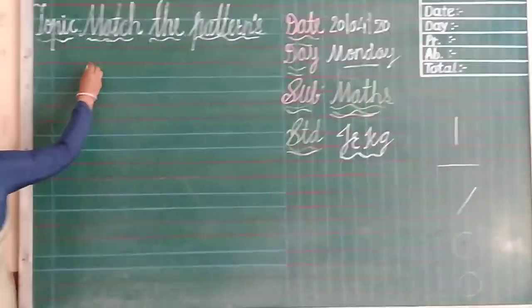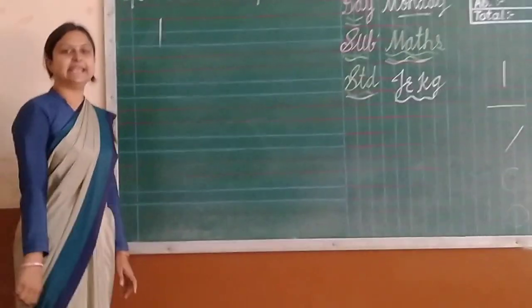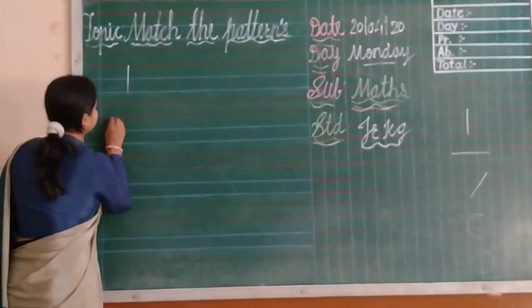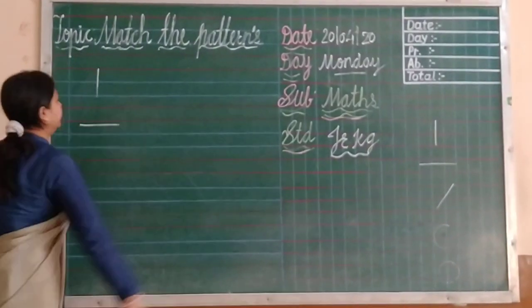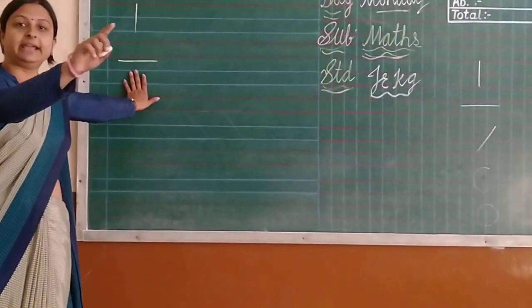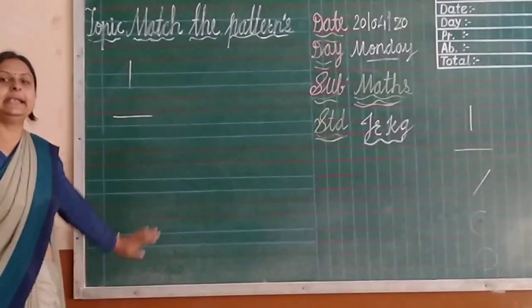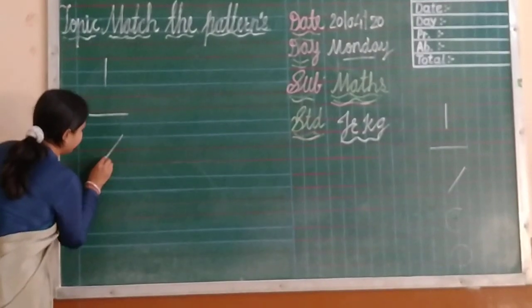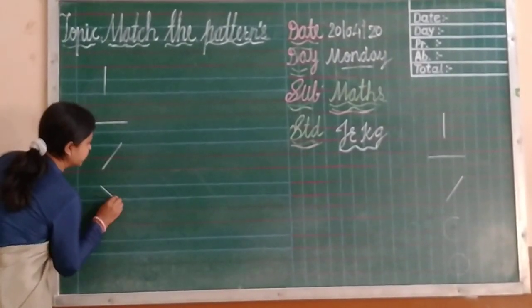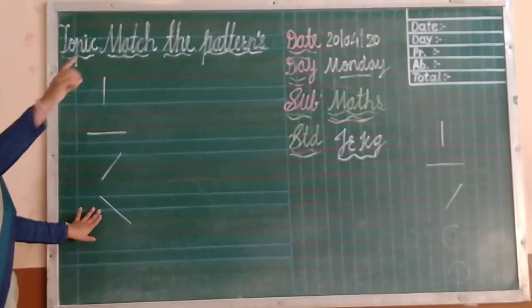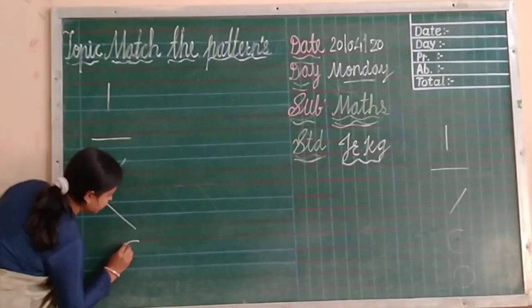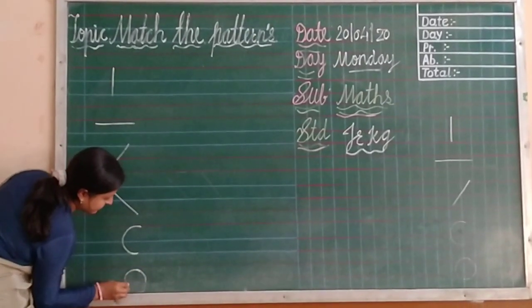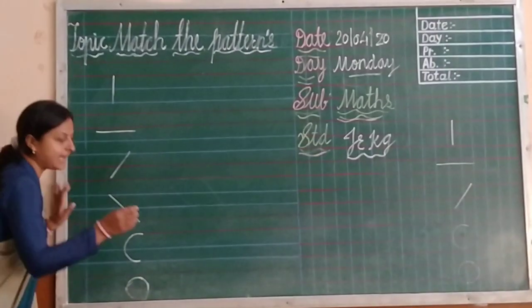Now students, tell me which pattern is this? Very good — this is standing line. And this one is slant line. And this one is also slant line. And this is also slant line. And this one is curl, and this one is curl, and this one is curl, and this is curl.